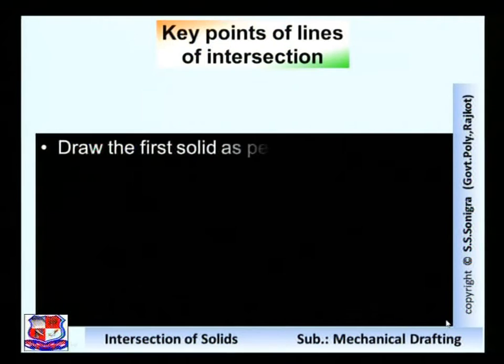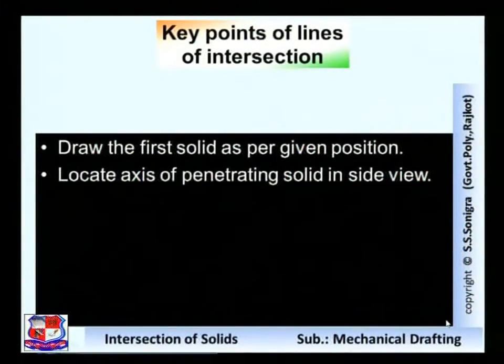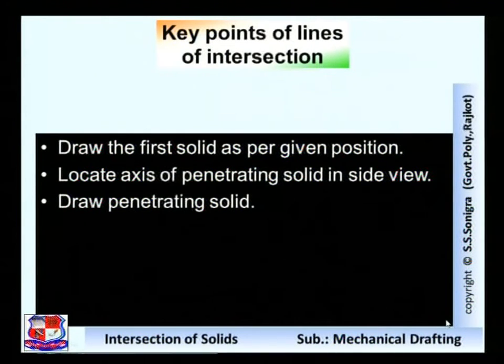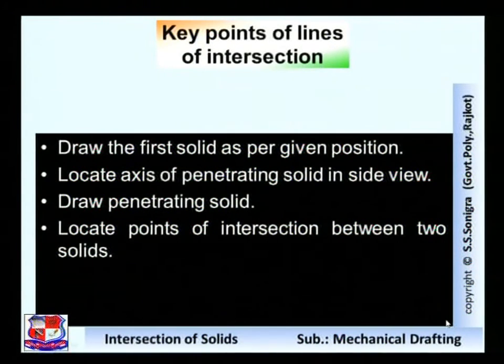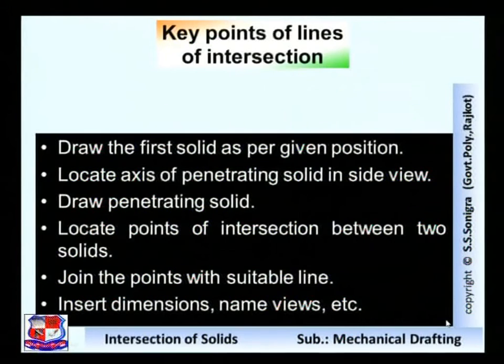To conclude, the key points for lines of intersection are: first, draw the first solid as per its given position — the top view of a cylinder is a circle; a prism gives its respective polygon; a cone gives a circle. Second, locate the axis of the penetrating solid in the side view, then draw the penetrating solid as a triangle, square, polygon, or circle. Third, locate the points of intersection between the two solids. Join the points with suitable lines, insert dimensions, name the views, and correct the types of lines — dotted or full — to complete the solution. Best of luck for your exam.